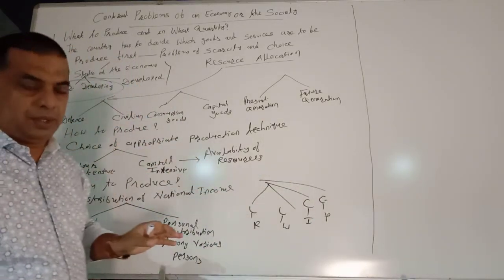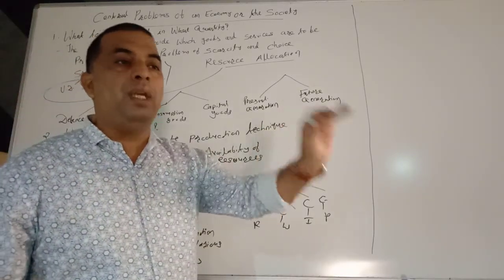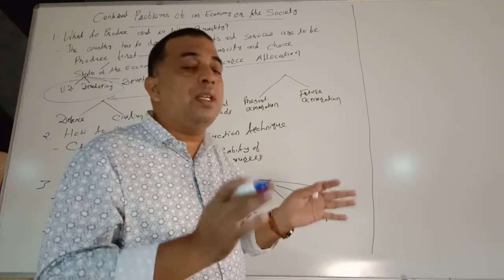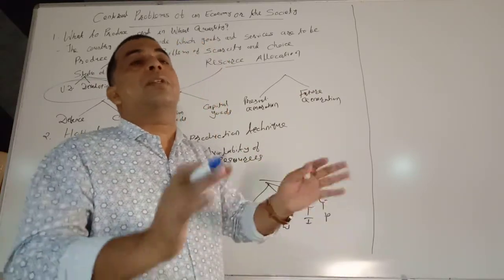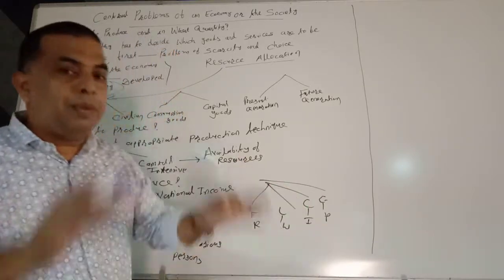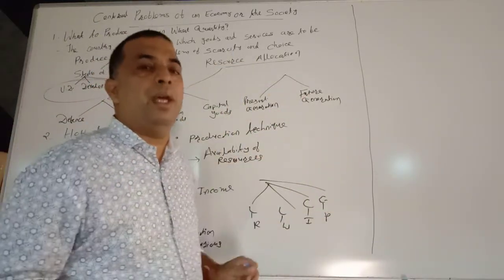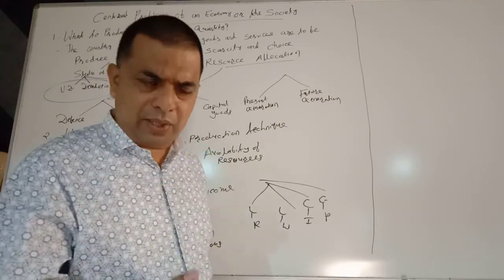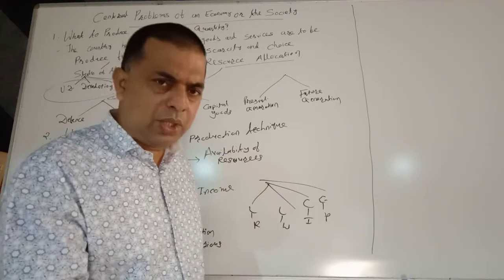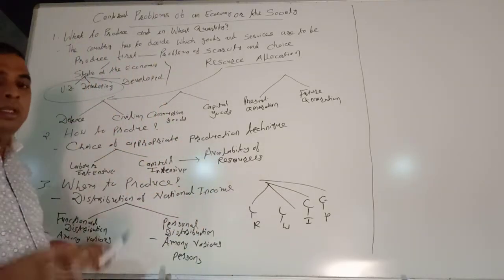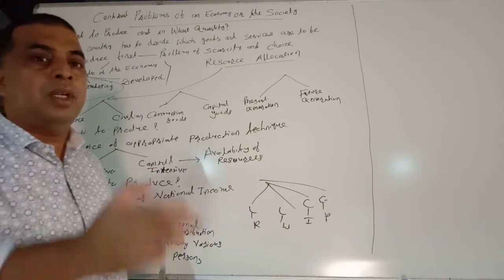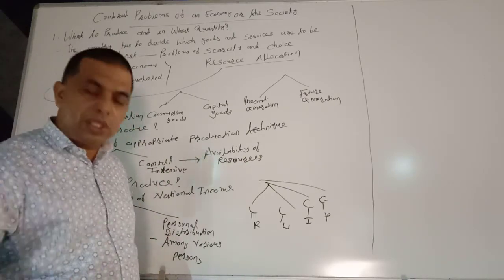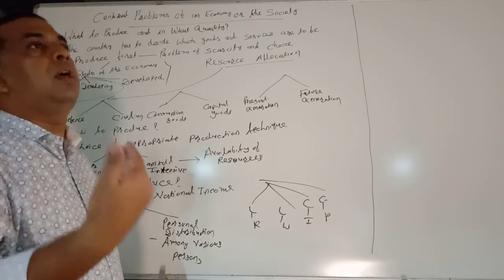For example, first preference should be given to the production of wheat, rice, etc. Why? Because it satisfies the basic needs of the largest section of society. Bangladesh, as a developing country, has its resources and luxury goods satisfy the needs of only a small fraction of the population. So Bangladesh should give more preference and priority to the production of basic goods and essential goods over luxury goods.